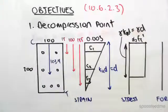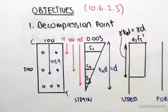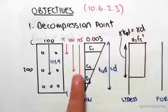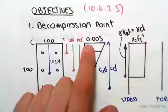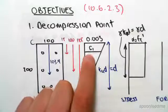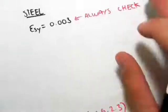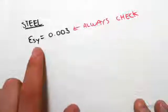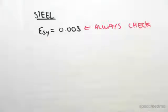Now the first thing we need to do is actually find the strain in the steel. The way we're going to do that is just by similar triangles. You can see we have a triangle here, 0.003, and we're going to find E1. When we do this, we always need to check it against our yield strain.